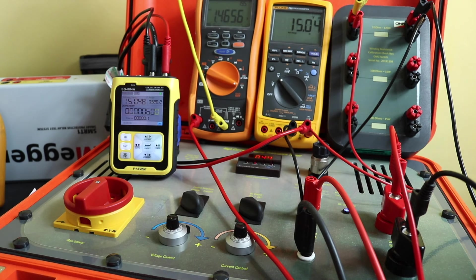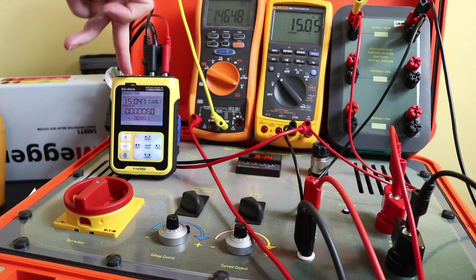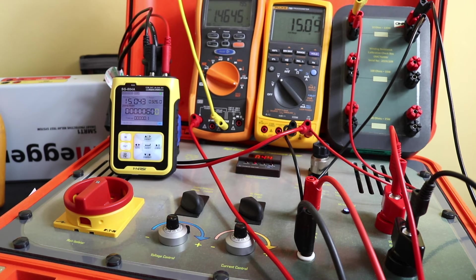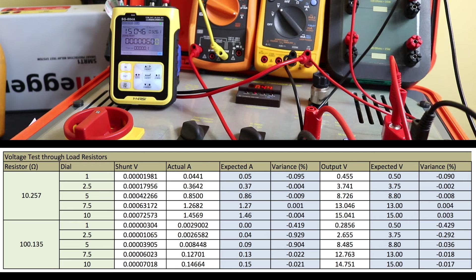Okay, so there's our maximum output there. So you can see we are reading 15.04 across the actual load resistor, which is marrying up to 15.046 on the SG-004A. We're pushing through 1.464 amps from the actual supply, and the voltage on my current shunt is 0.72778 millivolts. So we can feed some of those into the data tables and we can get some more readings out.